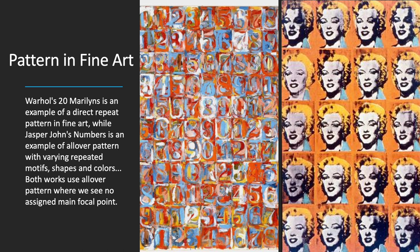Pattern in fine art. Warhol's '20 Marilyns' is an example of a direct repeat pattern in fine art, while Jasper Johns's 'Numbers' is an example of all-over pattern with varying repeated motifs, shapes, and colors. Both works use all-over pattern where there is no assigned main focal point. The Warhol would be a regular repeat, while the Jasper Johns painting looks very regular but is actually not set in a strict regular repeat with its use of numbers and colors.